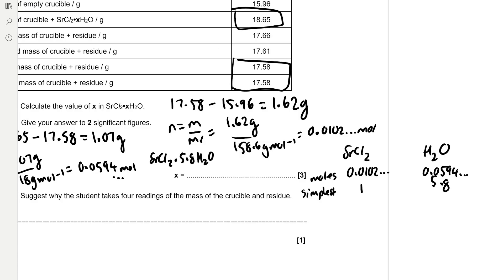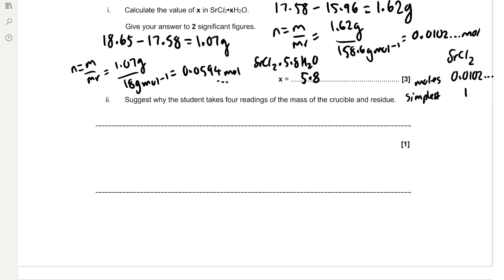The student takes four readings of the mass of the crucible and residue. This technique — heating to constant mass — helps ensure that all the water of crystallization has been removed. If they didn't heat to a constant mass, there could still be some water of crystallization left in the crystal structure, which would lead to an invalid value of X in the calculation.